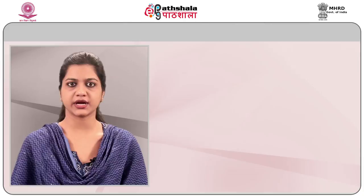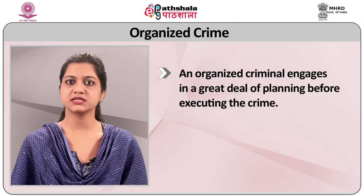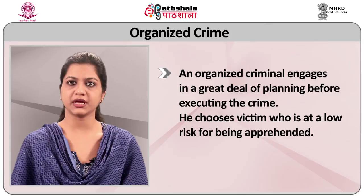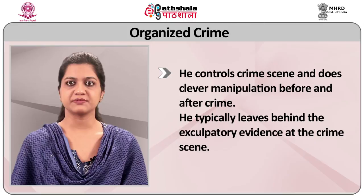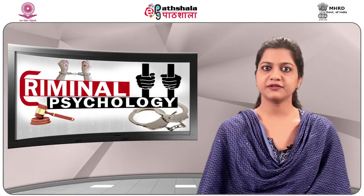The FBI has given the theory of organized crime and disorganized crime. An organized criminal engages in a great deal of planning before executing the crime. He chooses a victim who is at low risk for being apprehended, controls the crime scene, and does clever manipulation before and after the crime. He typically leaves behind little evidence at the crime scene. The organized criminal is usually methodical, manipulative and cunning with an amiable facade — typical of a psychopath, sociopath, or antisocial personality.